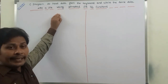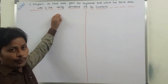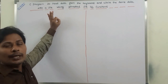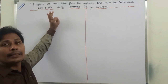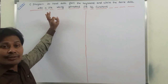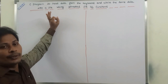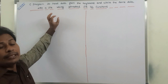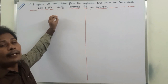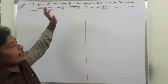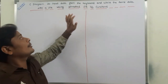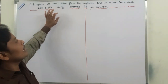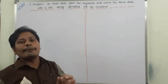What type of data we have to read from the keyboard? Two integers, one character, and one string are read from the keyboard. The same data we have to write into a file called sample.c using formatted file IO functions.